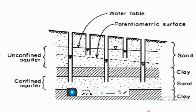In simple words, the potentiometric surface is a line joining points of the hydraulic head of confined aquifer wells. The surface is constructed from the line joining points of the hydraulic head of the confined aquifer wells, as opposed to the water table which applies to unconfined aquifer wells.